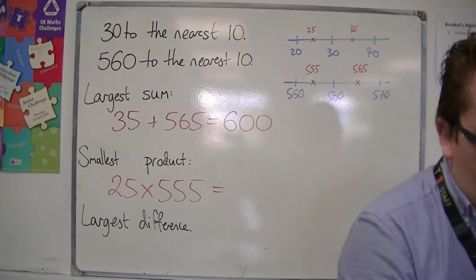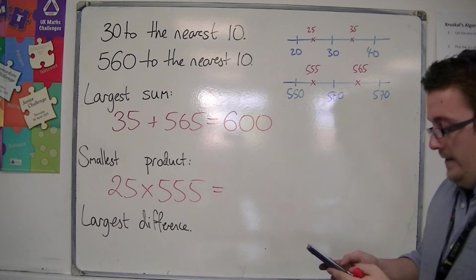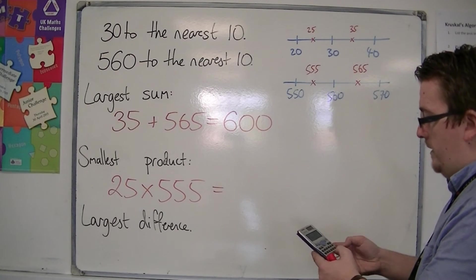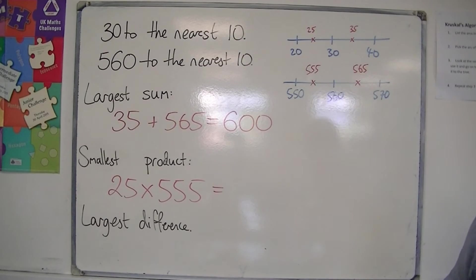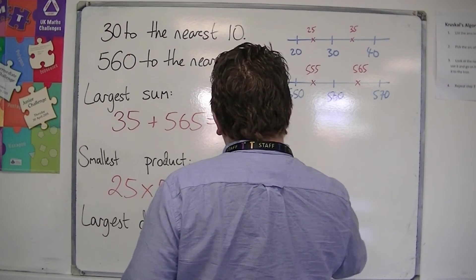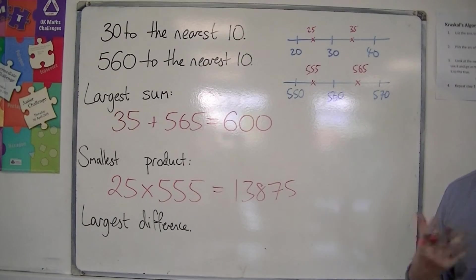So I'm not going to do that one on paper or in my head. I'm going to just do 25 times 555 in my calculator, 13875. So that's the smallest product I could have possibly got.